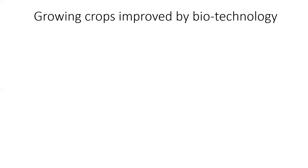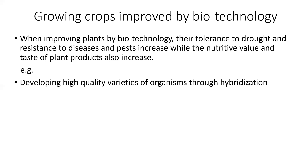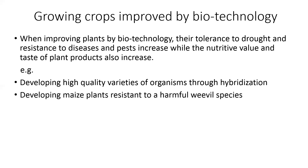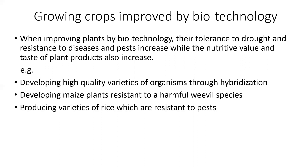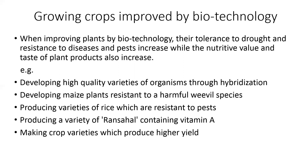Growing crops improved by biotechnology: when improving plants by biotechnology, their tolerance to drought and resistance to diseases and pests increase, while the nutritive value and taste of plant products also increases. Examples include: developing high quality varieties through hybridization, developing maize plants resistant to a harmful weevil species, producing varieties of rice resistant to pests, producing a variety of crops containing vitamin A, and making crop varieties which produce higher yield.